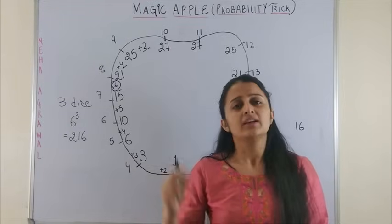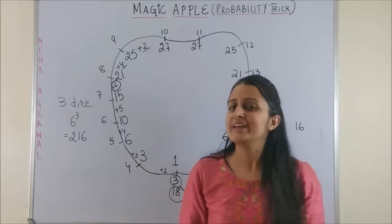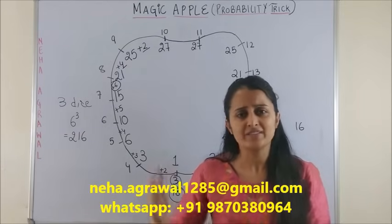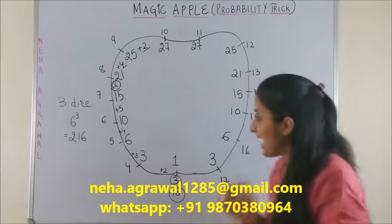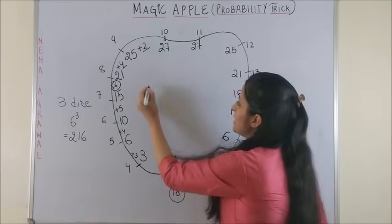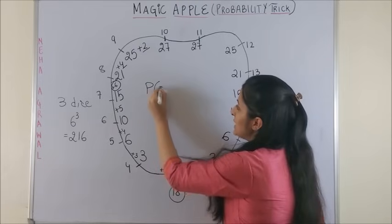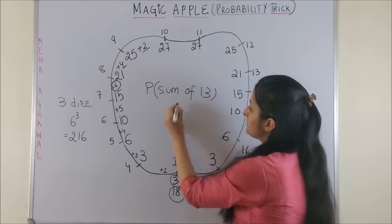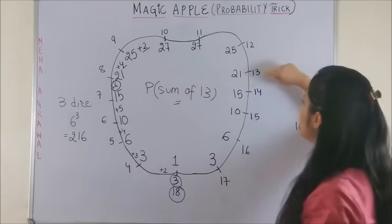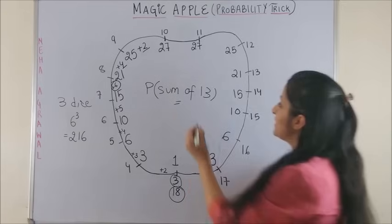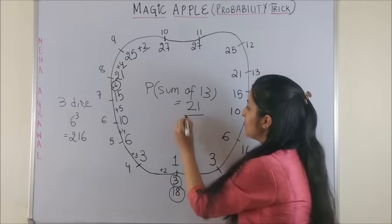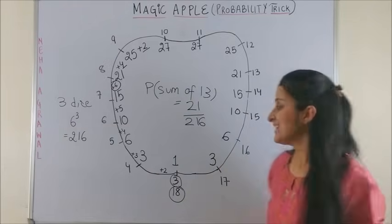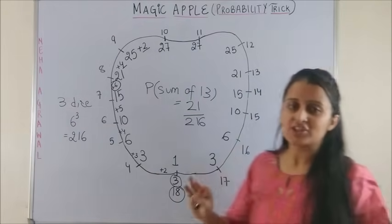So whenever you come across such a question, the best thing would be to quickly create this Magic Apple. Trust me, it doesn't take more than four or five seconds to make this. Having done that, if I ask you any probability—let's say, what is the probability of getting sum of 13? You don't have to count or write anything. Sum of 13 is 21, so 21/216 is your answer. Wasn't that easy?